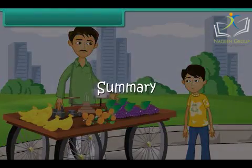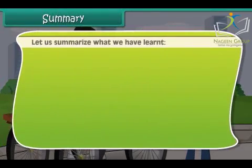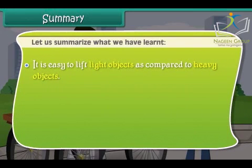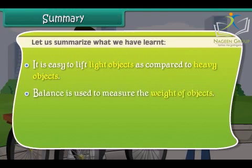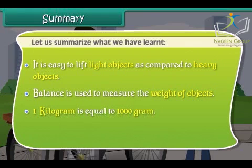Summary. Let us summarize what we have learned. It is easy to lift light objects as compared to heavy objects. A balance is used to measure the weight of objects. One kilogram is equal to 1000 grams.